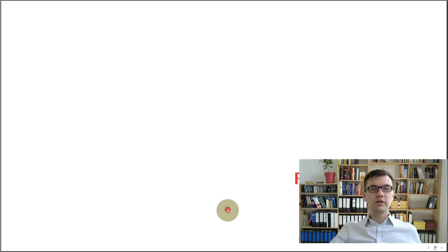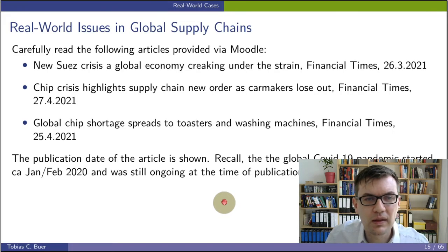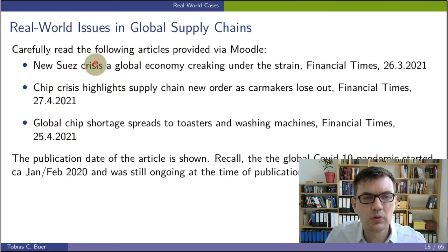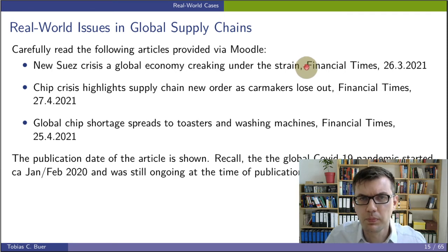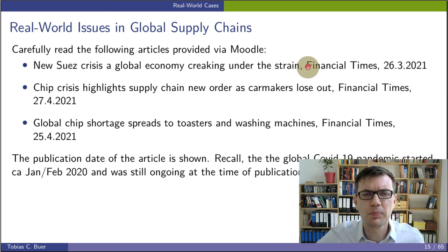Now let's go to the real world and have a look at some real-world cases. I decided to support these with newspaper articles from the Financial Times discussing issues in global supply chains from recent weeks. You will find the three articles uploaded to Moodle. The first is about the new Suez crisis — a global economy cracking under the strain — which happened when the Suez Canal was blocked by a big container ship. You can see how a transportation problem affected the supply chains of many companies all around the world.